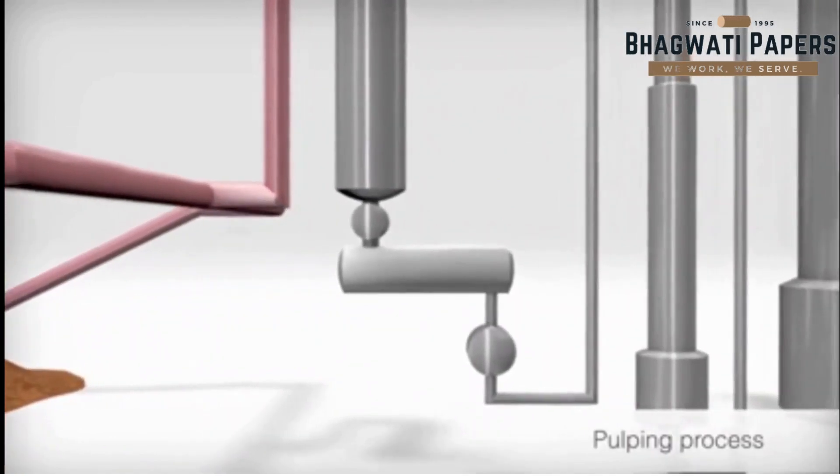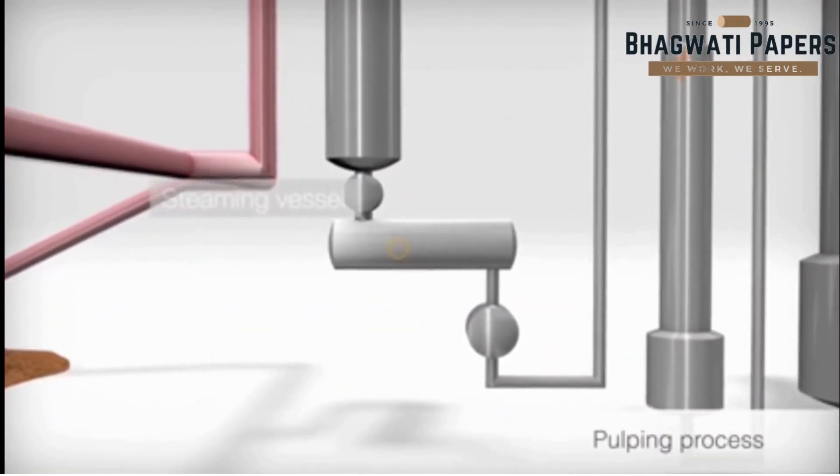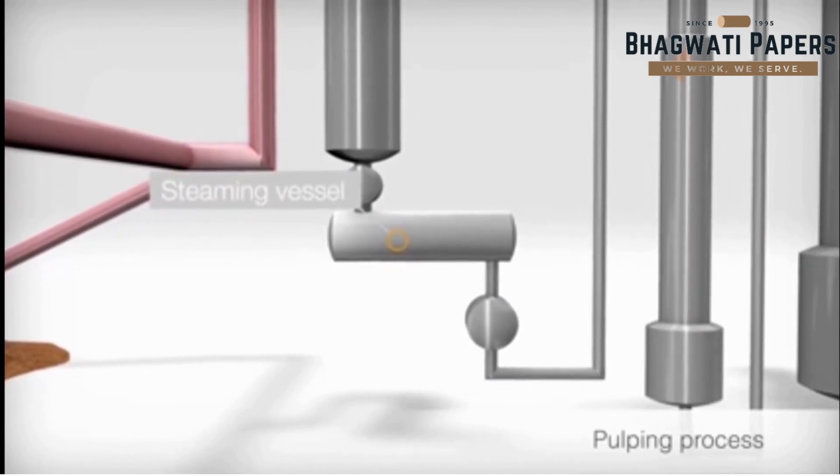After the chip bin, the chips enter the low pressure part of the process, the steaming vessel, where the remaining air in the chips is pressed out.